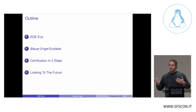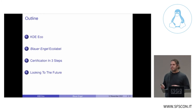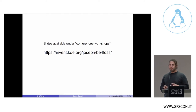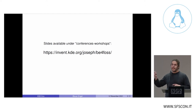Here's an overview of what I'm going to talk about. I'm going to first present the KDE Eco project as well as the Blauer Engel Eco label, then go through three steps to obtaining Eco certification for software, and wrap it up with looking to the future. If you'd like the slides — I have a lot of links in here — you're welcome to download them from GitLab at invent.kde.org/joseph/BE-for-FOSS. I will have that link again at the end.